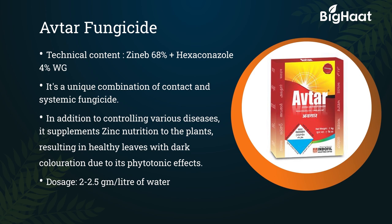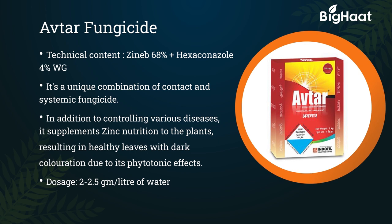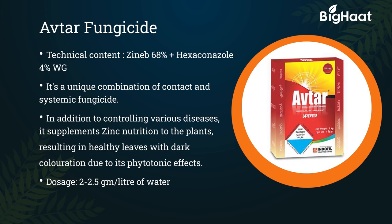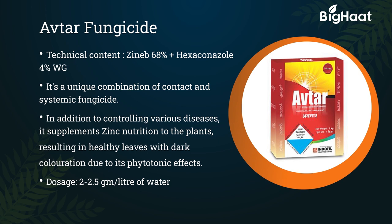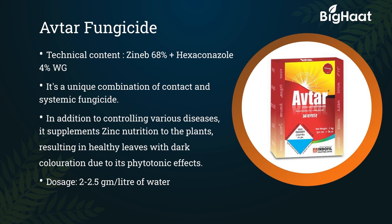Autar fungicide contains Zineb 68% and Hexaconazole 4% WG. It is a unique combination of contact and systemic fungicide. In addition to controlling various diseases, it supplements zinc nutrition to the plants, resulting in heavy leaves with dark coloration due to its phytotonic effects. Its dosage is 2 to 2.5 gram per liter of water.